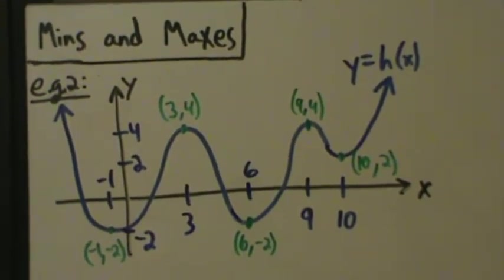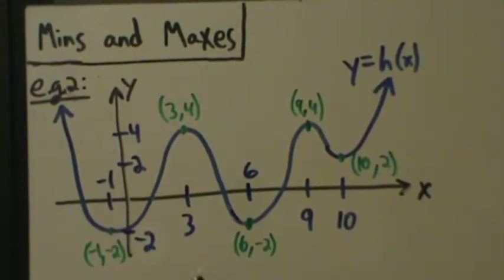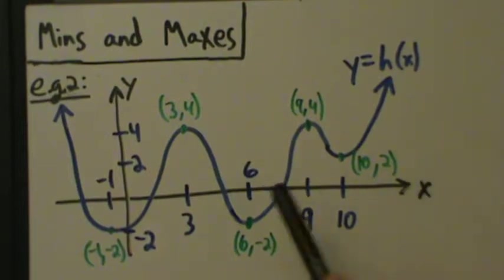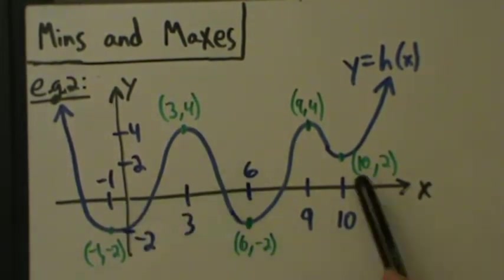All right, so here's a brief example with mins and maxes graphically, continuing from the last video. So here, we have this function y equals h of x, and it's got this goofy, curvy thing going on.